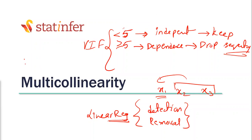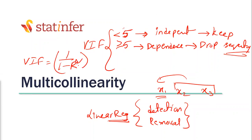VIF formula: VIF equals 1 divided by (1 minus R-squared). What R-squared is this? Not the overall model R-squared of Y versus X — this is X versus X, meaning R1-squared, R2-squared and so on. So VIF limits are below or above five.